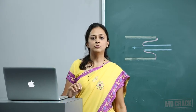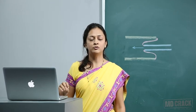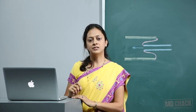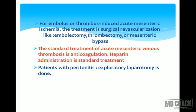Angiography is the most commonly reliable investigation in acute mesenteric ischemia. Even CT scan of the abdomen may not give a perfect diagnosis in acute mesenteric ischemia. For embolus or thrombus-induced acute mesenteric ischemia, the treatment is surgical revascularization such as embolectomy, thrombectomy, or mesenteric bypass. The standard treatment of acute mesenteric venous thrombosis is anticoagulation — heparin administration is the standard treatment.